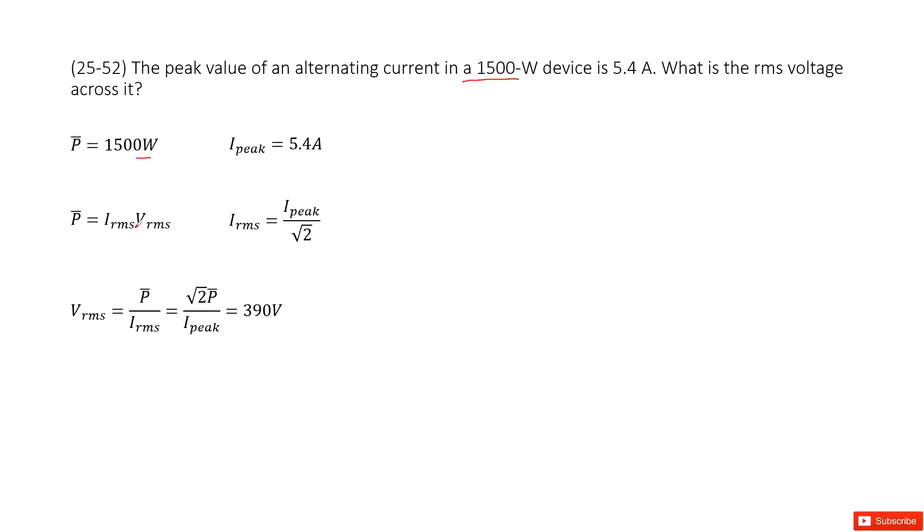And this definition for alternating current is IRMS times VRMS equals the power for this alternating current.